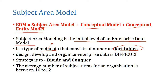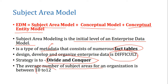Designing, developing, and organizing the enterprise data is very difficult. The best strategy organizations implement is divide and conquer — first analyze the bigger picture, then break it down into smaller pieces, and then define the enterprise data model. The average number of subject areas for any organization is between 10 to 12, though it is not a hard rule. It depends on the organization and the nature of the business — it can be less than 10 or grow up to 15 or 20.